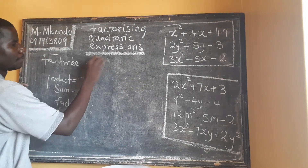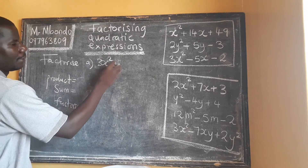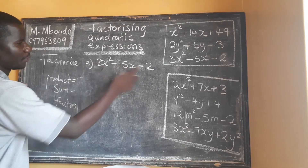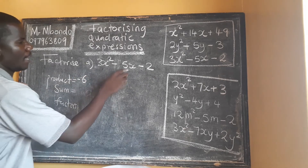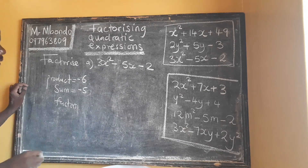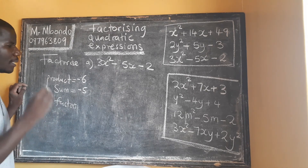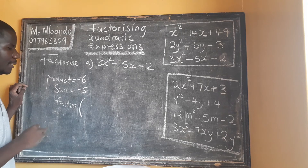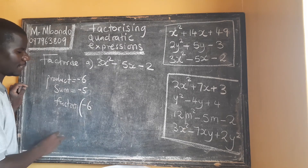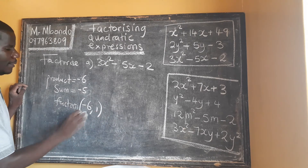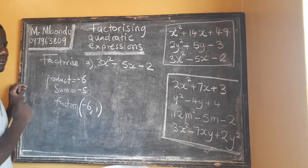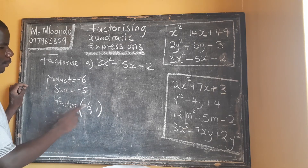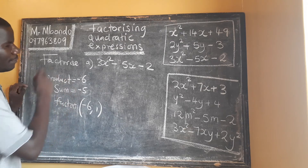Let's look at the last one: 3x² − 5x − 2. Our product: 3 multiplied by negative 2 is negative 6. Our sum is negative 5. What are those factors? The factors of negative 6 that add to negative 5 are negative 6 and positive 1 — one is negative and one is positive.